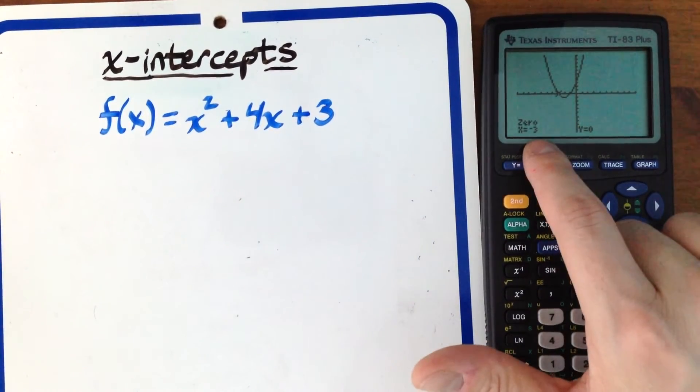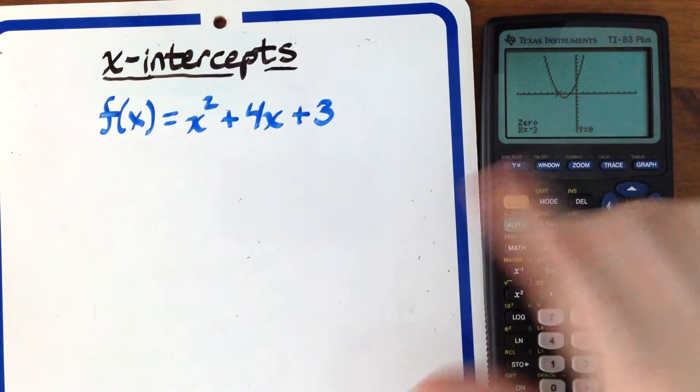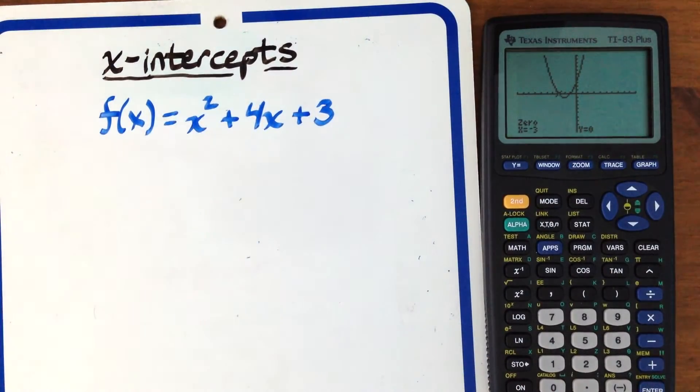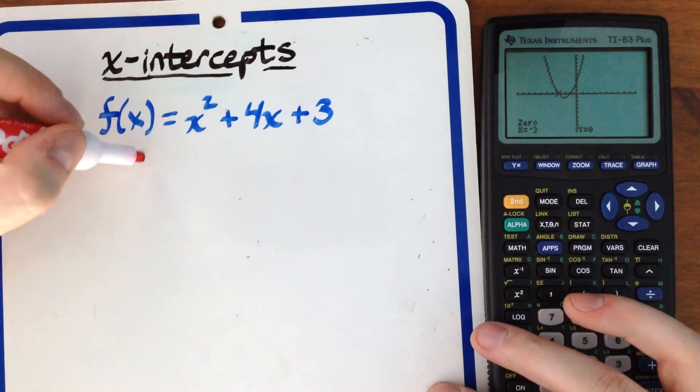Hit Enter, and it shows the coordinates: negative 3, 0. So one x-intercept is (-3, 0).